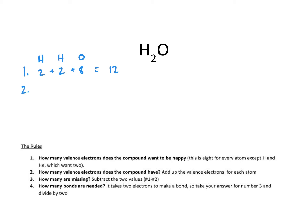Step two: how many do they actually have? We look at the periodic table — hydrogen has one, hydrogen has one, and oxygen has six. So that makes a total of eight. They don't match up, but that's good, because that's why we make bonds. Twelve minus eight is four electrons missing. Each bond is represented by two electrons, so four divided by two means I'm going to draw two bonds — two lines.